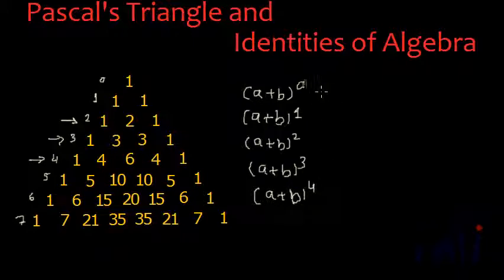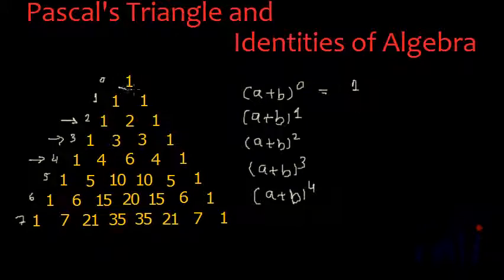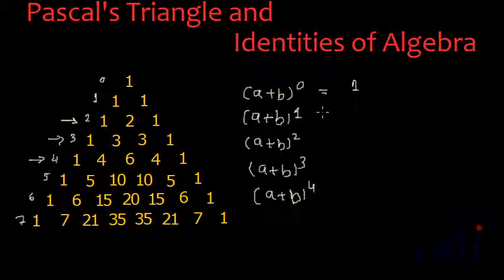First, (A+B)⁰. Any number or variable to the power 0 is 1, and the element in row 0 is also 1. And (A+B)¹ is nothing but A+B. Till here it looks very simple.